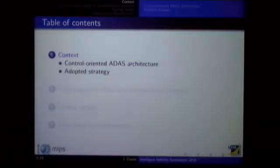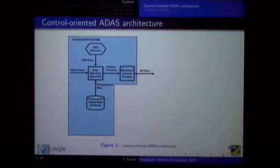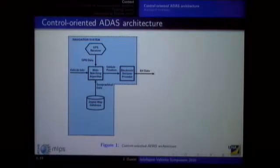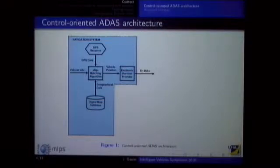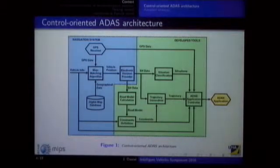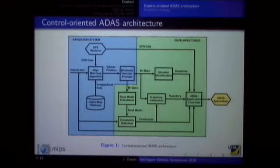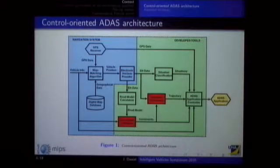The context of our work is navigation-aided driver assistance systems, which means that the main sensor of our system is the navigation. The electronic horizon provider is important because this tool helps us to extract the relevant information from the digital map databases. This information is used by several tools we've developed to help controllers and to apply safe controls on the vehicle.